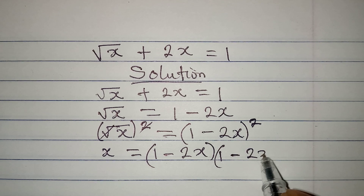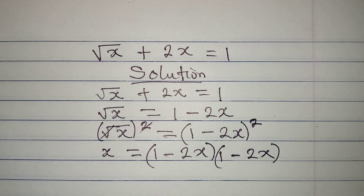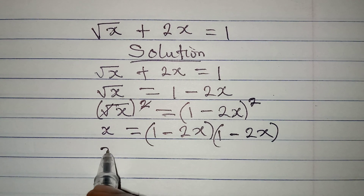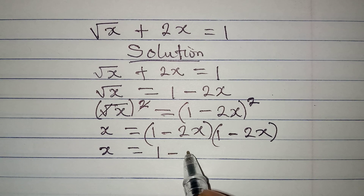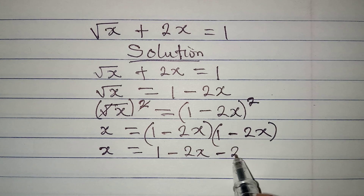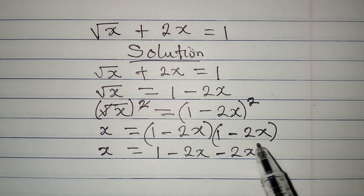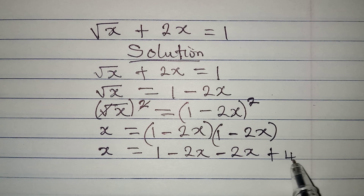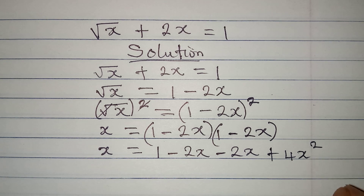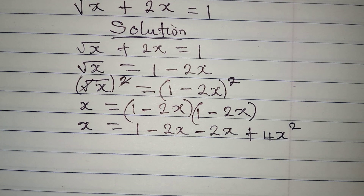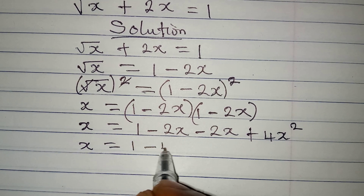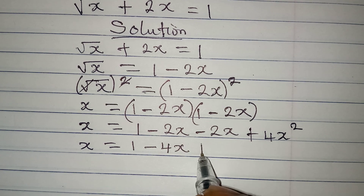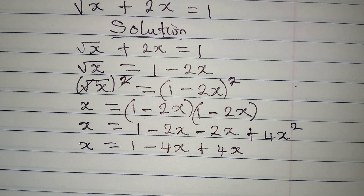Now let's multiply: x will be equal to 1 times 1 is 1, 1 times minus 2x is minus 2x, then minus 2x times 1 is minus 2x, and minus 2x times minus 2x will give us plus 4x squared. So from here x will be equal to 1 minus 4x plus 4x squared.